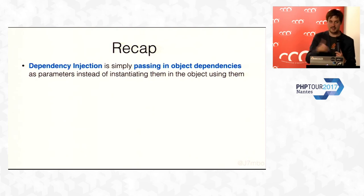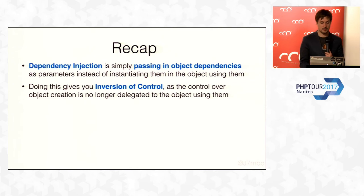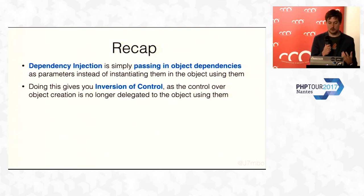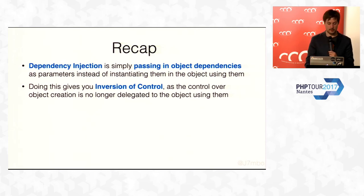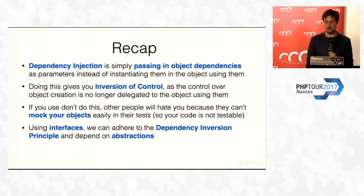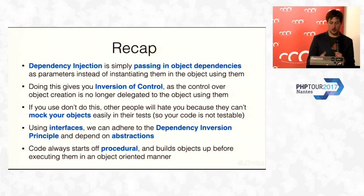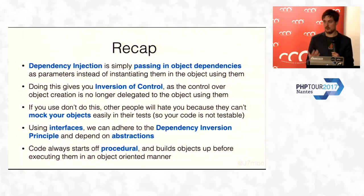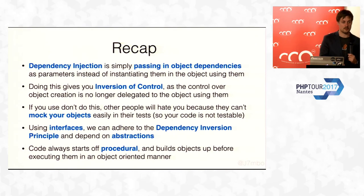A quick recap: dependency injection is simply passing in object dependencies instead of instantiating them inside the object. Doing this gives you inversion of control. If you don't do this, other people will hate you because they can't easily mock your code. Using interfaces lets you adhere to the dependency inversion principle. Code always starts in a procedural section — even in object-oriented programming there's a procedural section at the beginning that orchestrates and creates everything.